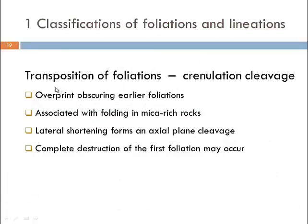To explain how crenulation cleavages form, we need to discuss the transposition of foliations — a process where overprinting obscures earlier foliations and forms a new one. This is a very common process in the evolution of orogenic belts, almost always associated with folding and most prominently developed in mica-rich rocks, which means we are dealing with greenschist or amphibolite facies conditions. It requires lateral shortening and normally leads to the formation of an axial-plane cleavage in such rocks.